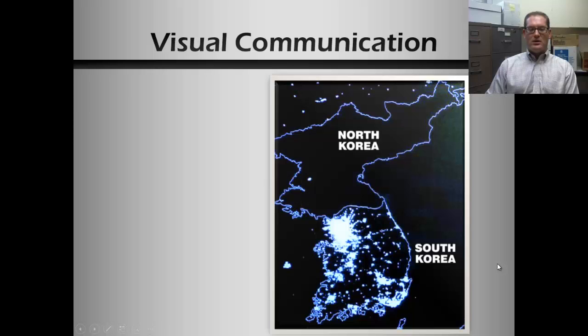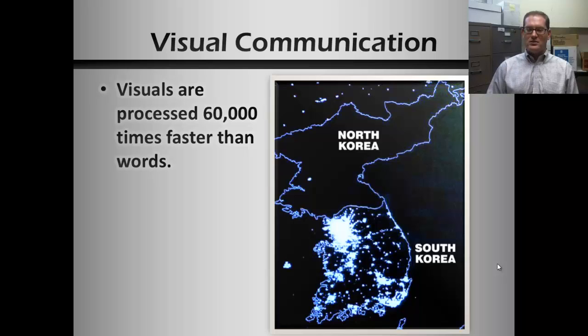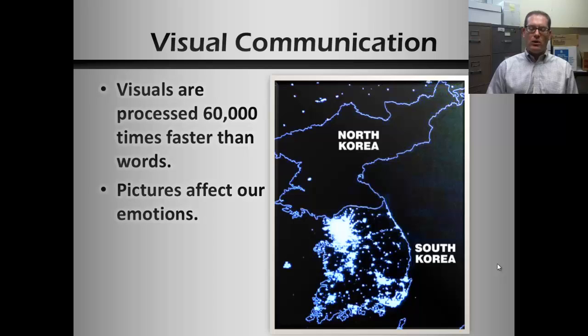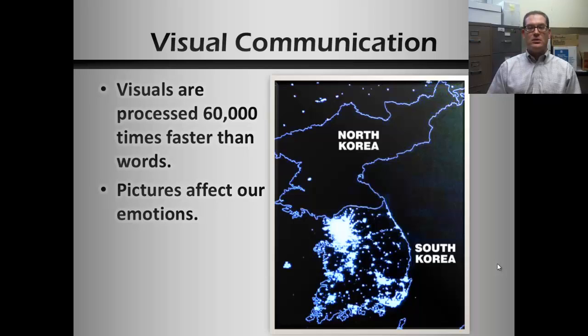Visuals are processed 60,000 times faster than words. So theoretically, you can process more information faster using images. Not only that, but pictures affect us more than words do. Words are kind of logical, they can be descriptive, but many times they are a little bit detached, whereas pictures can impress something upon us emotionally that words cannot necessarily do, and they do so in a shorter time frame.